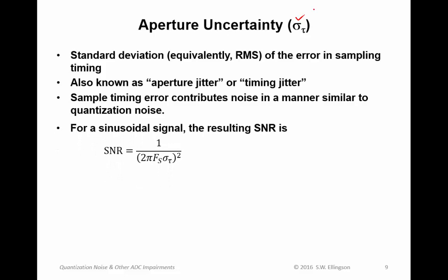For a sinusoidal signal, the resulting signal-to-noise ratio can be worked out. The signal-to-noise ratio associated with aperture uncertainty is 1 over the square of 2 pi times the sample rate times this aperture uncertainty parameter sigma_tau. Note that doubling the sample rate reduces the signal-to-noise ratio by a factor of 4. So this can be a big deal. If you go from 10 megasamples per second to 20 megasamples per second, that means the signal-to-noise ratio associated with this uncertainty is getting worse by 6 dB.